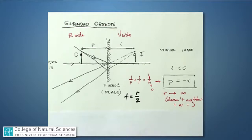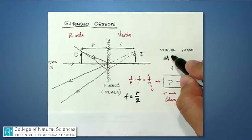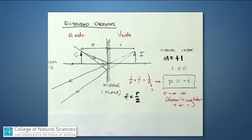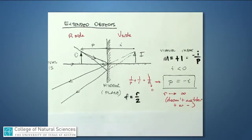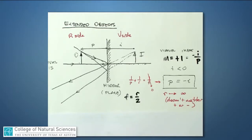The magnification equals plus 1, because magnification is minus I over P, and since minus I equals P, this gives magnification of plus 1. That means the image and object have the same apparent size — if you're 6 feet tall standing in front of a large mirror, your image appears 6 feet tall. Because magnification is positive in this case, it's an upright image. You will not see yourself upside down. That's the flat mirror.